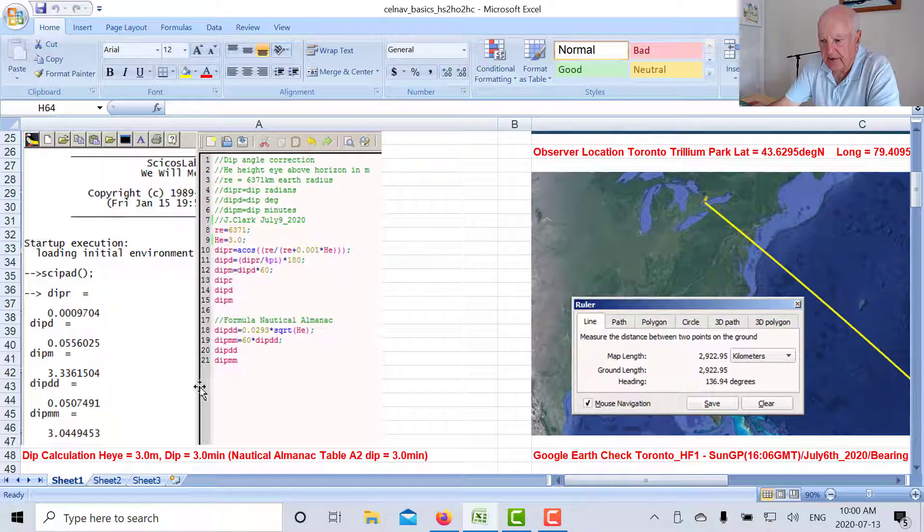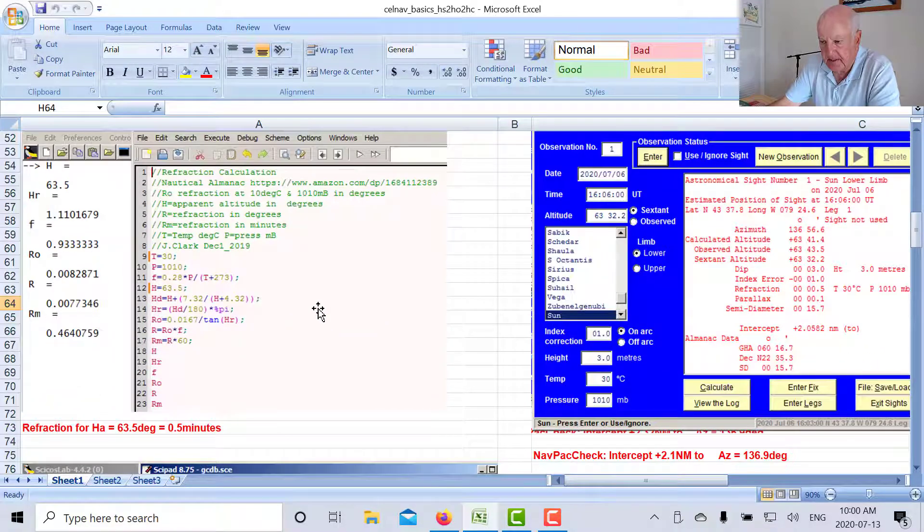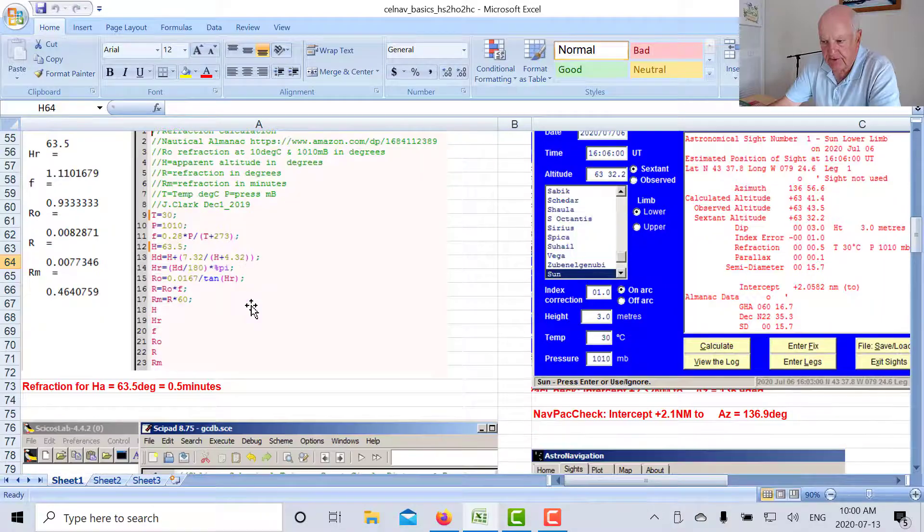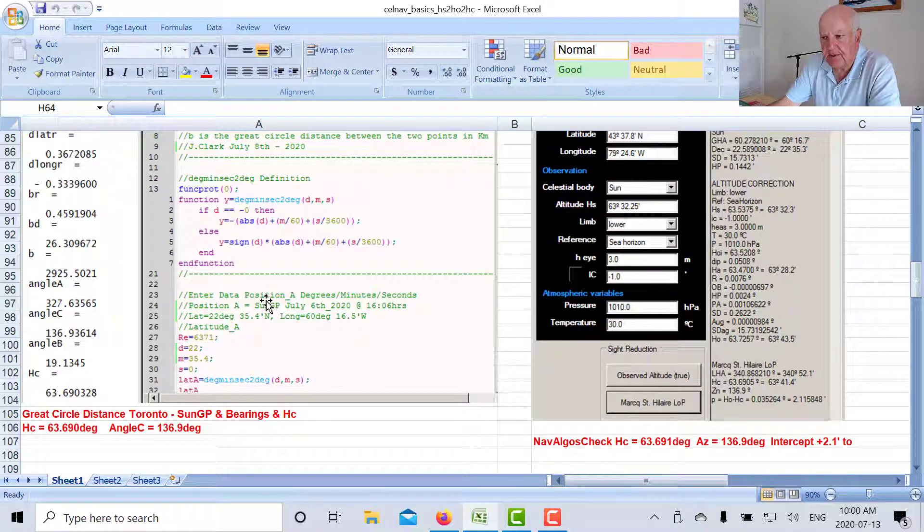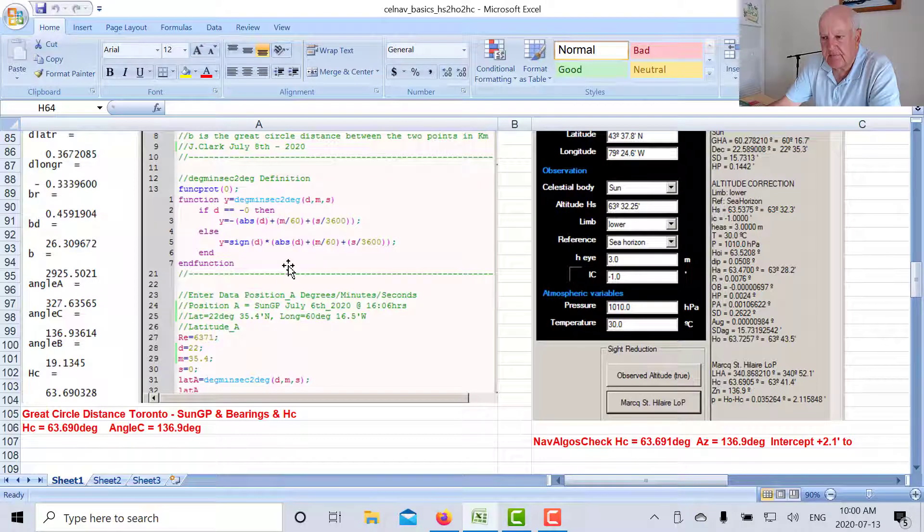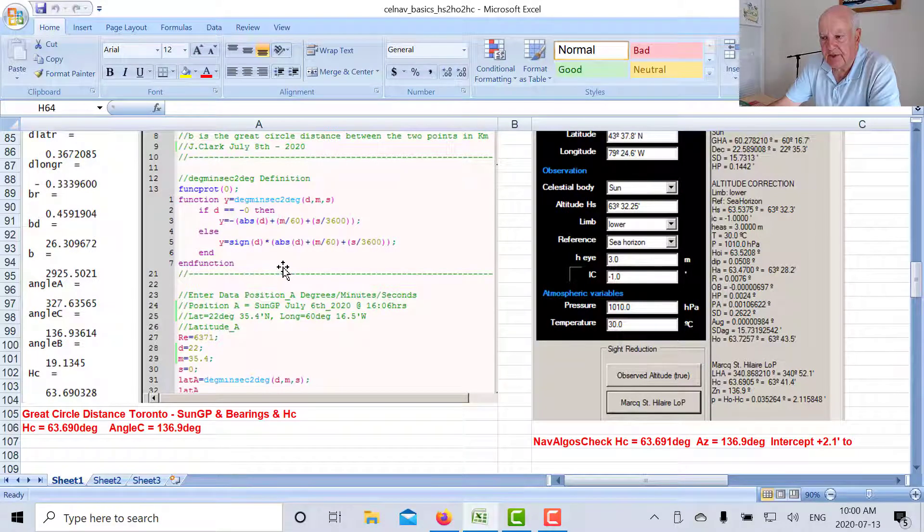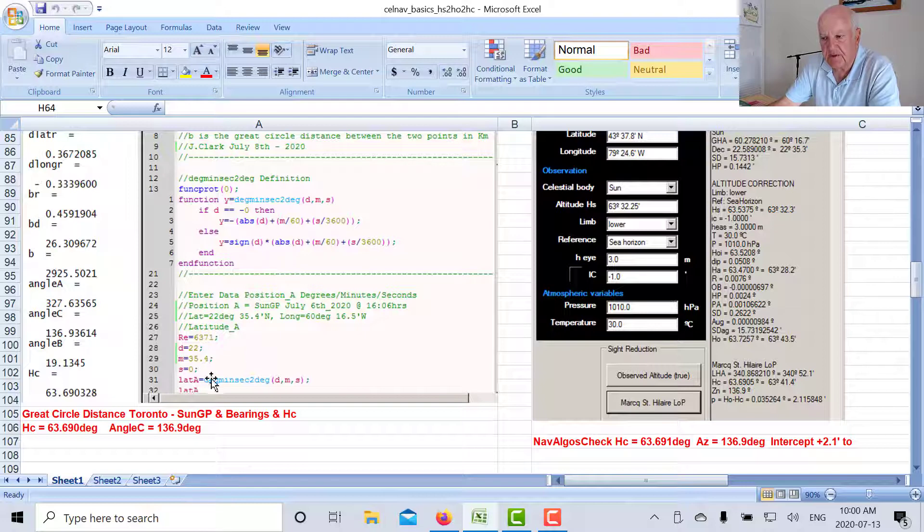We've seen this before. This is a script file for the dip calculation, it gives us three minutes and there's a formula that we worked out for the refraction, 0.5 minutes. Here's the script file for the great circle distance and bearings. This is a solution of the navigational triangle using the spherical cosine law.